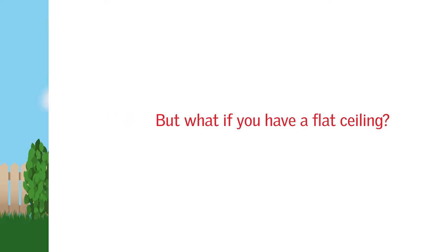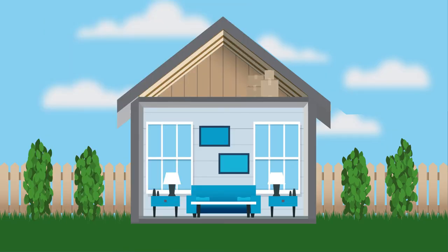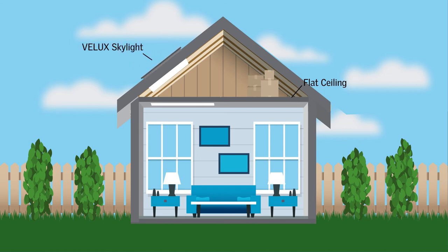Boxes stack on the home's attic floor, with text reading Flat Ceiling. A Velux Skylight fits into the steepled roof, and a window opens in the flat ceiling as a small room builds itself around the skylight — labeled Light Well.